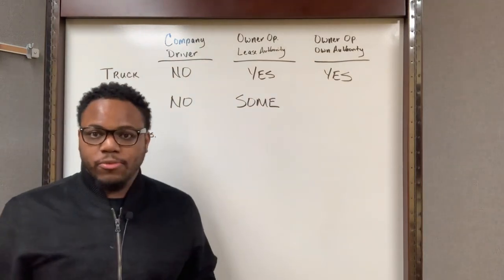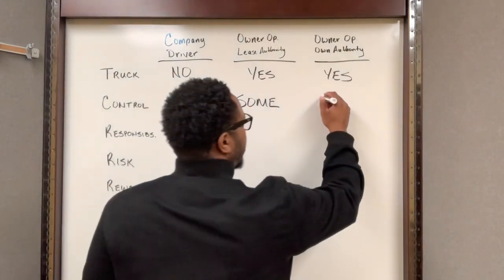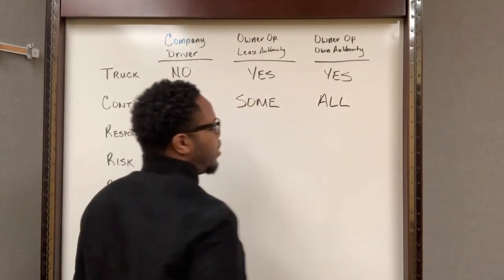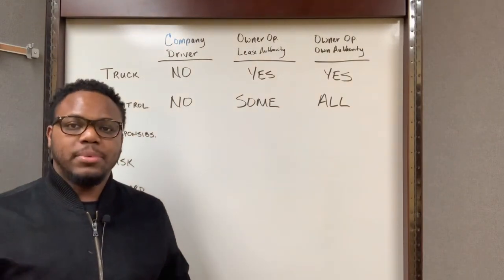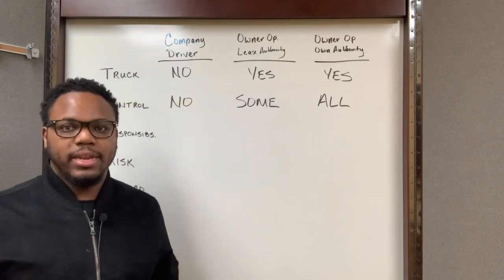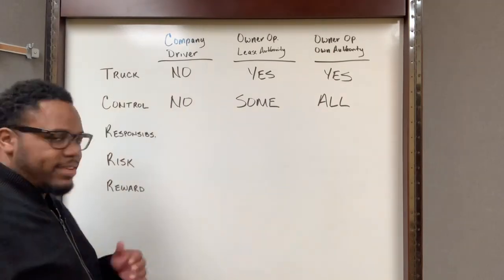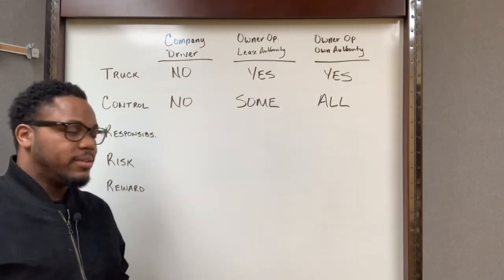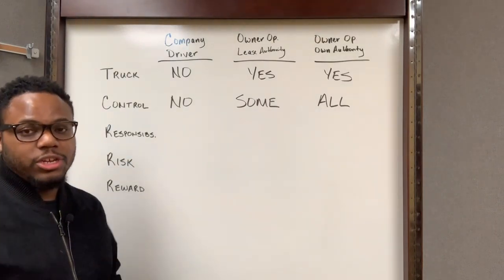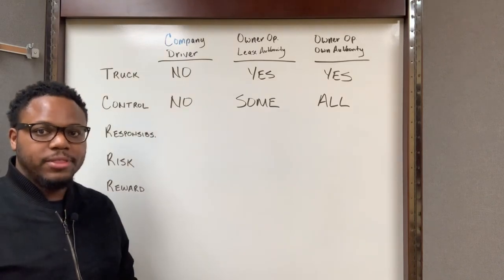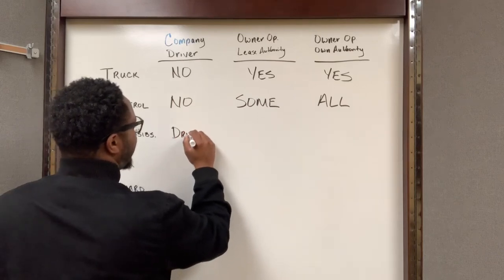As an owner-operator who has their own authority, you have all control. You can run when you want to. You can pick and choose what type of loads you haul, what timeframes you deal with, what days you want off, what days you want to work extra — all that good stuff when you have your own authority. Next category: responsibilities. As a company driver, your main and only responsibility is driving and delivering the freight safely — drive only.